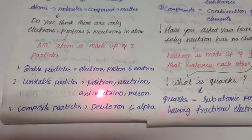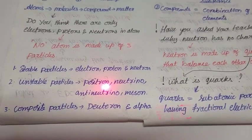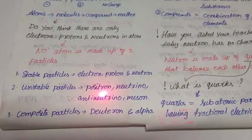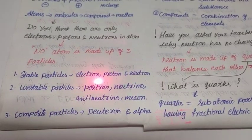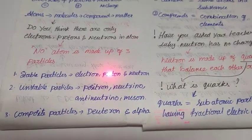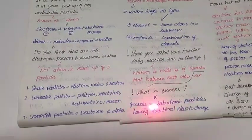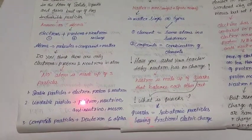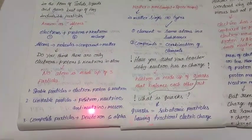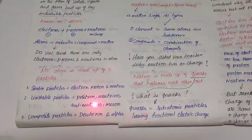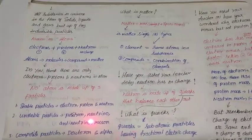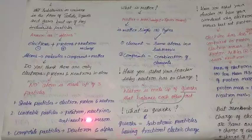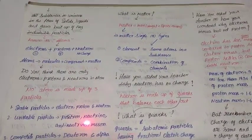As you know, electron, proton, and neutron are stable particles. Unstable particles are positron, neutrino, anti-neutrino, and meson. Composite particles are deuteron and alpha. What is the necessity of these particles? These particles don't have much necessity when compared to these three particles. Maybe these particles provide energy to the above three particles. Interested students can further read these unstable and composite particles and comment below, so that some scientists will be born in this channel.